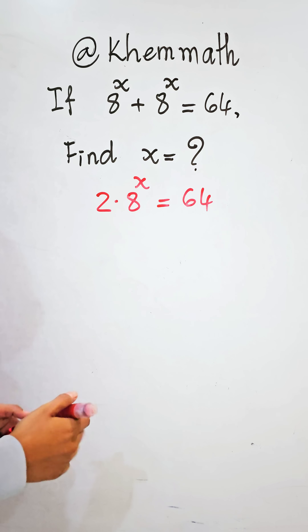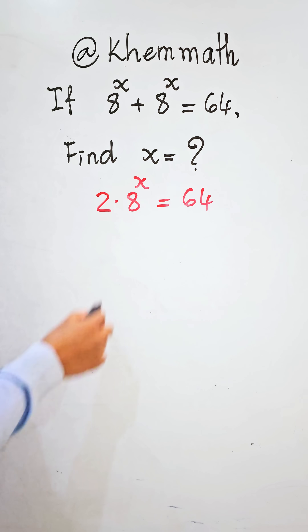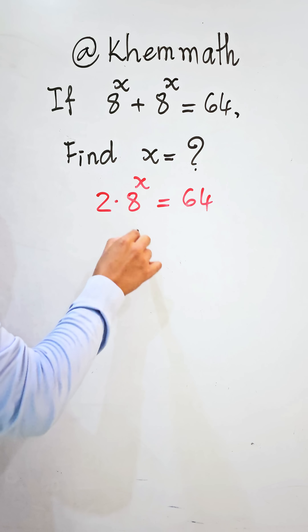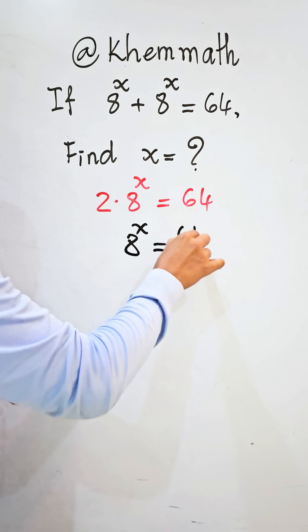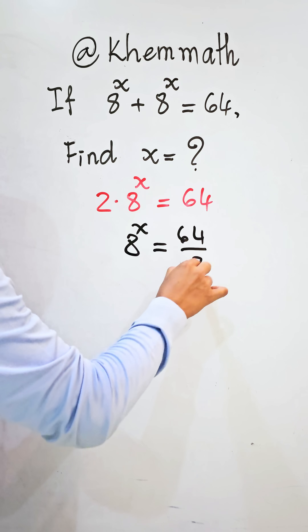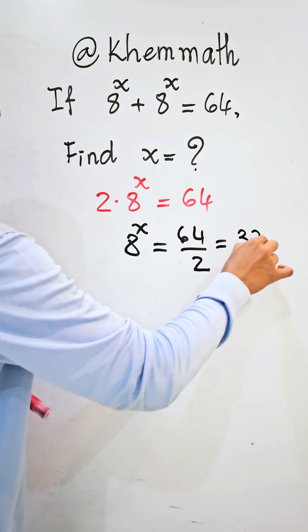We divide both sides of this equation by 2, so we get b power 8 equals 64 divided by 2, which equals 32.